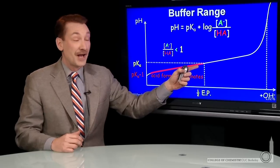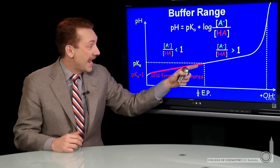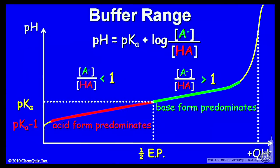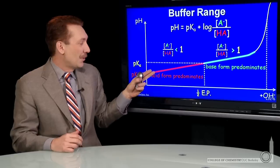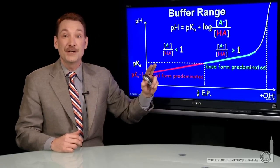And of course, if the base form predominates, you'd expect this term to be positive. And that occurs when the pH is slightly larger than the pKa. So the Henderson-Hasselbalch expression allows us to calculate the pH throughout this region.